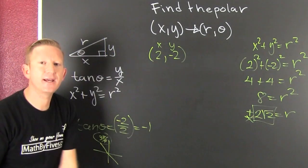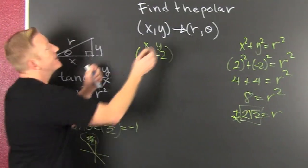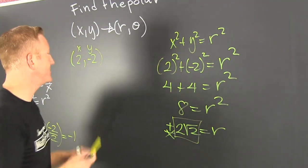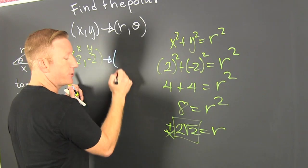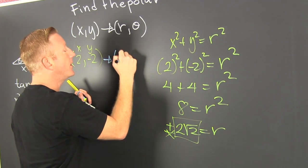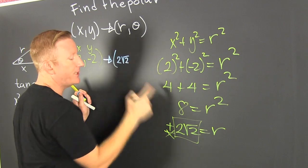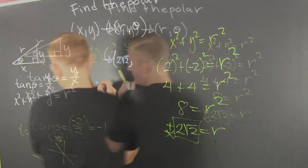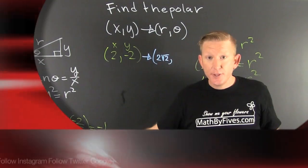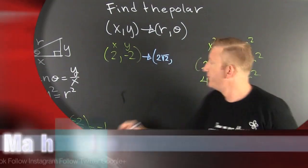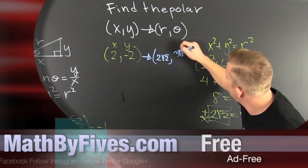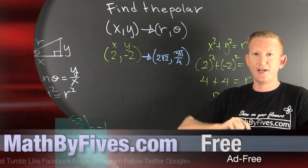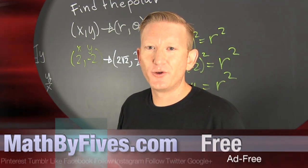My point is that a polar point is expressed in terms of R and theta. My R is 2 root 2, and my theta is 3 pi's over 4. So the polar coordinate is (2√2, 3π/4). This video is probably going to get trolled so hard, but whatever.